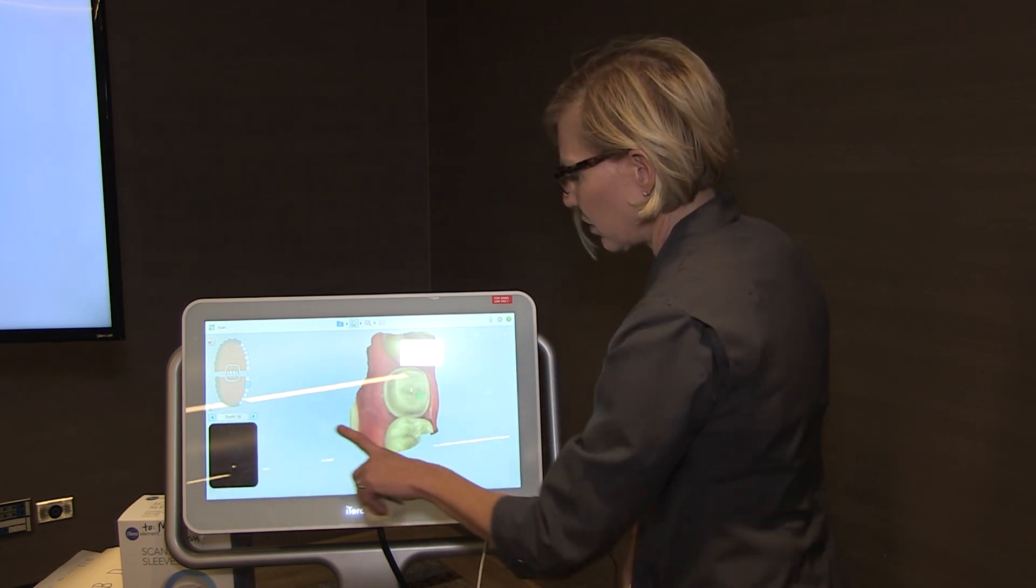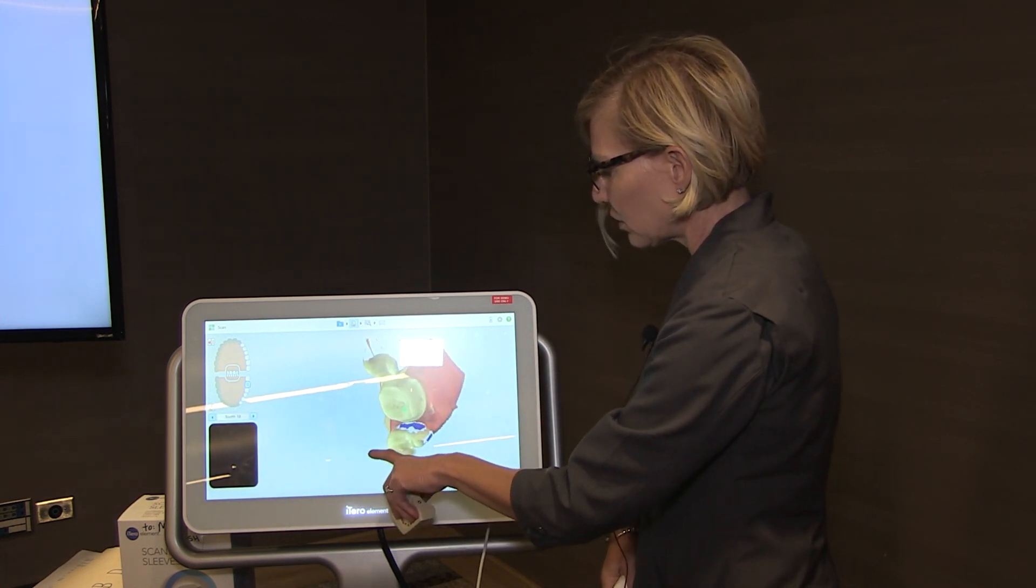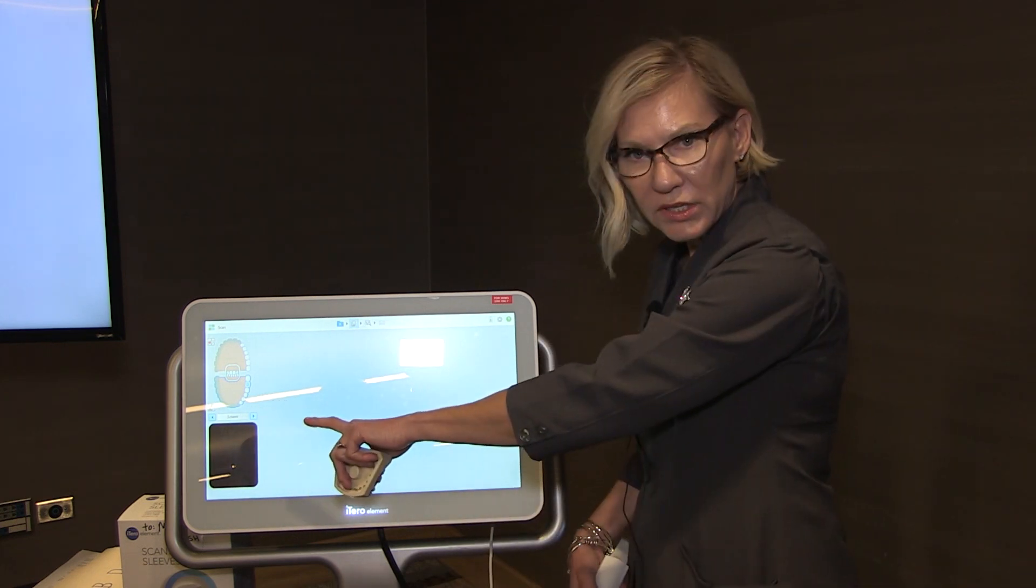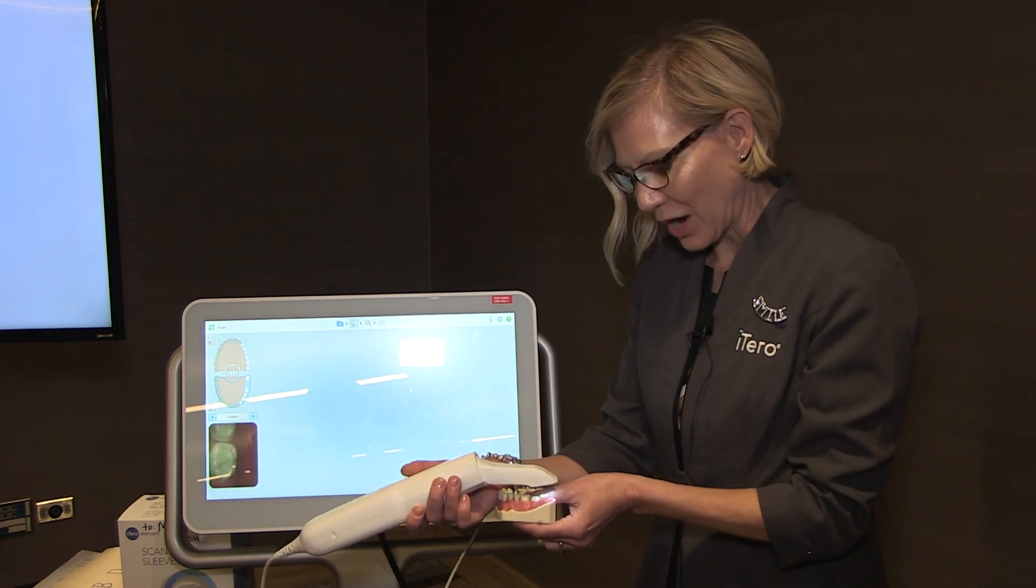Change your scan to color often helps you to be able to clearly see that margin line. Now I'm going to do a quadrant scan because this is a single unit crown.